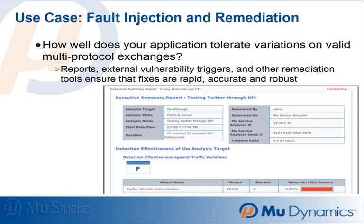Robustness testing by fault injection is a key requirement both in the software development lifecycle and the service deployment lifecycle. By systematically injecting faults into test cases created from PCAPs,